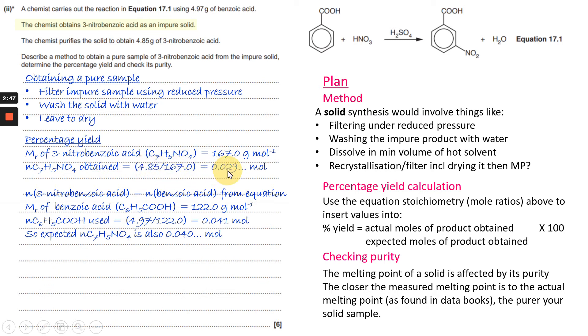Now that comes out as a calculator value, hence the dots afterwards. Now from the equation up here, you can see there's one mole of your benzoic acid makes one mole of three nitrobenzoic acid, so it's important to remember that when you're doing your calculation.